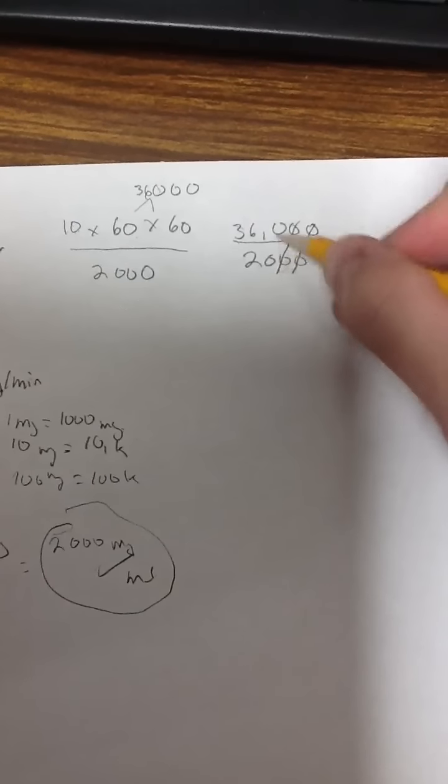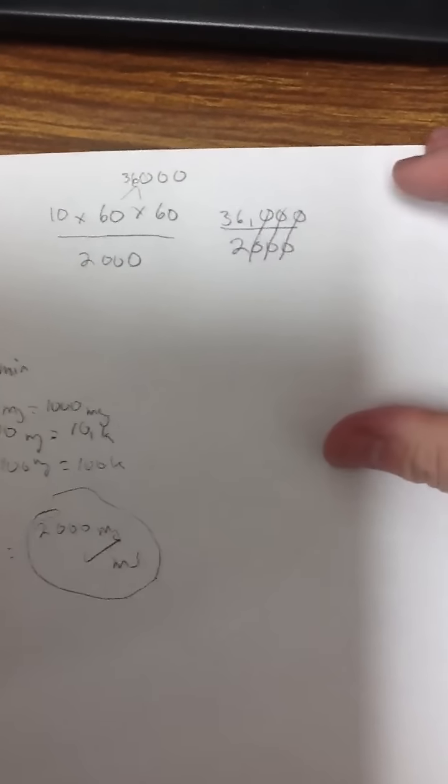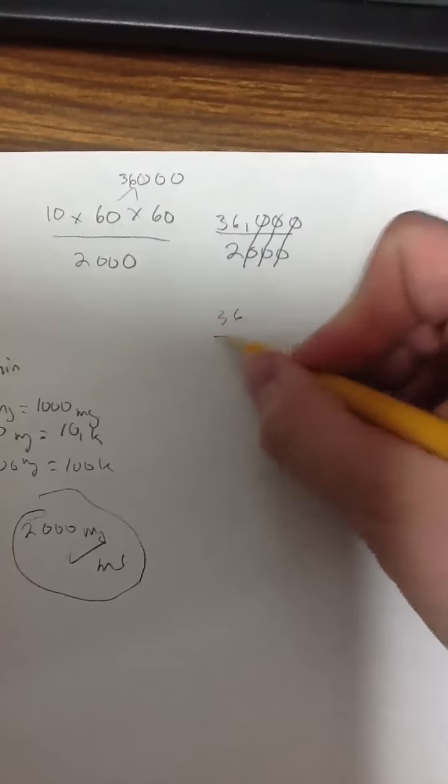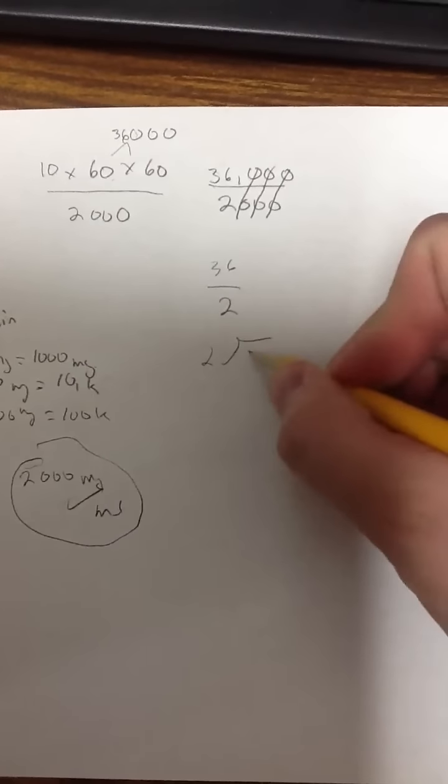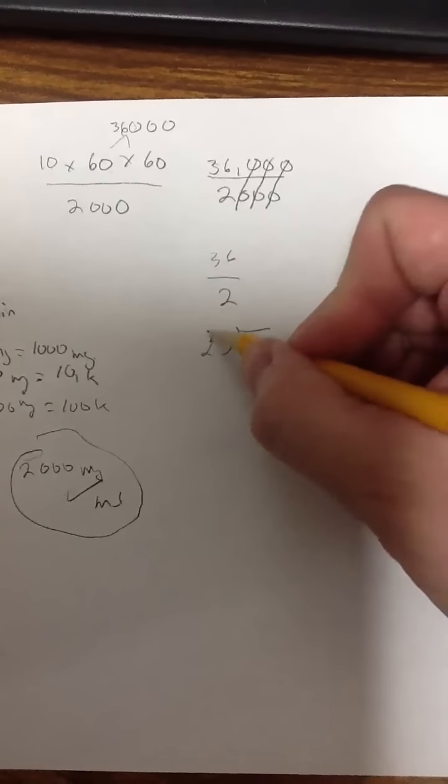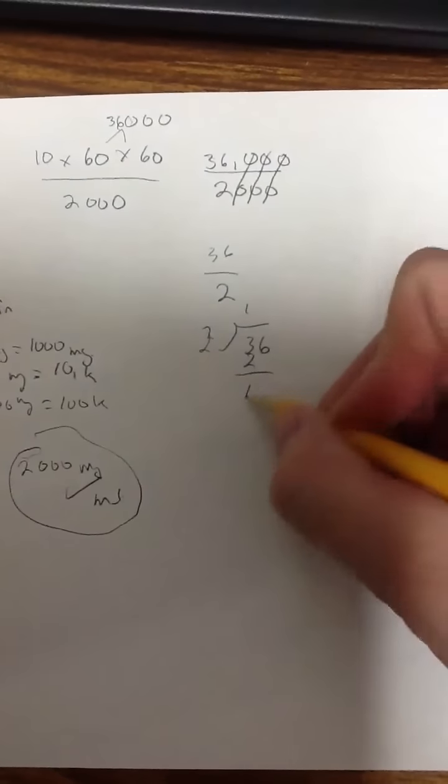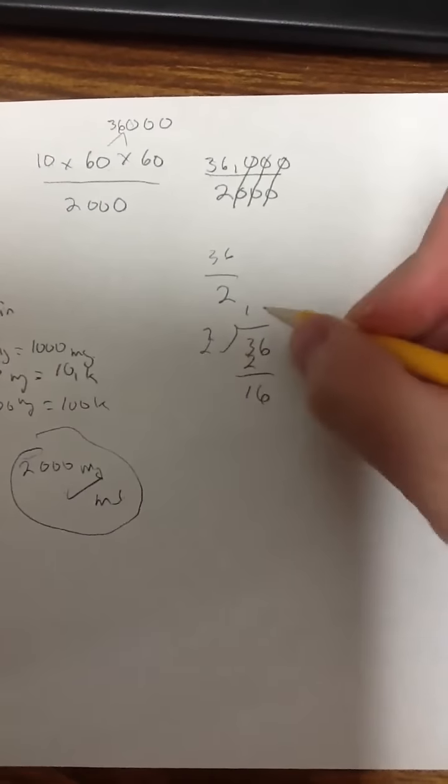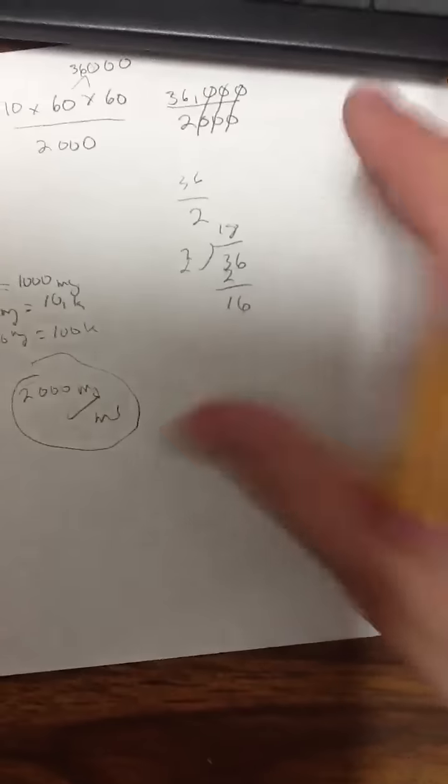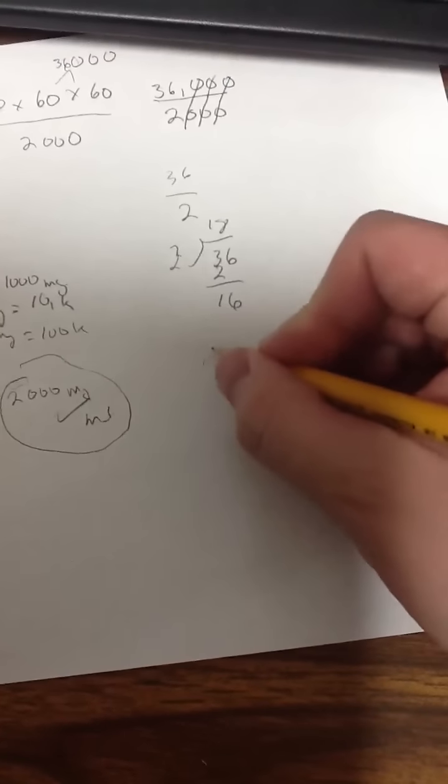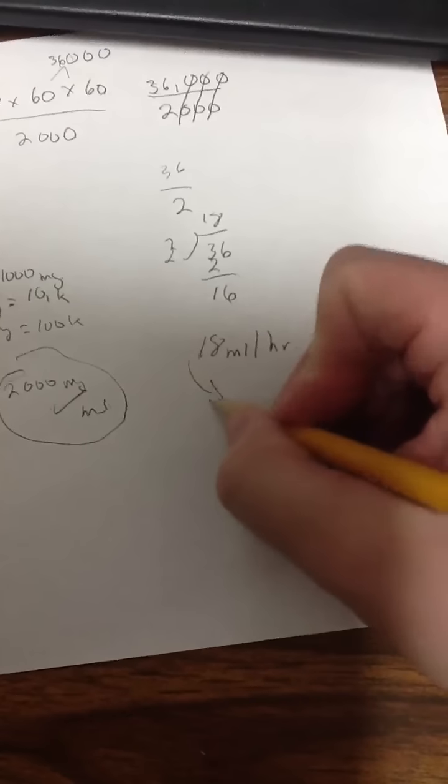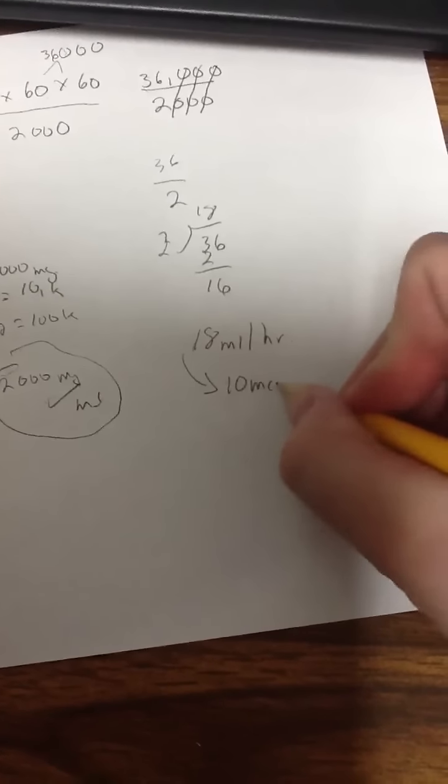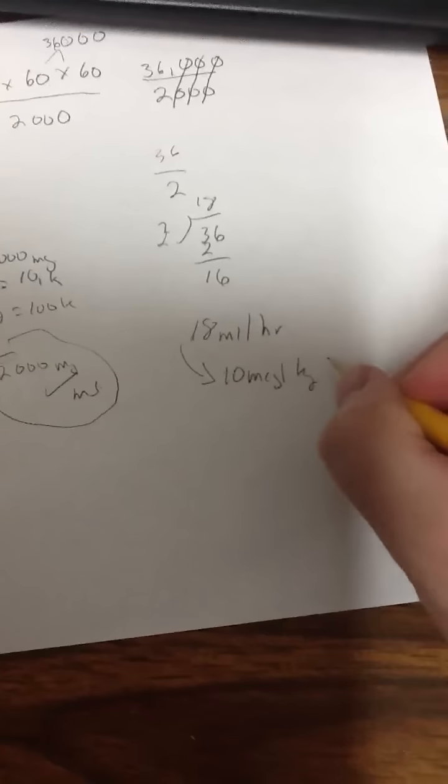So then I can divide 2 into 36. So 2 goes into 3 one time. That gives me 16. 2 goes into 16 eight times. My dose is 18 milliliters per hour. So if I run my infusion at 18 milliliters per hour, that will give me a dose of 10 micrograms per kilogram per minute.